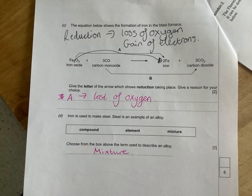Iron is used to make steel. Steel is an example of an alloy. An alloy is a mixture of metals, normally two different metals.